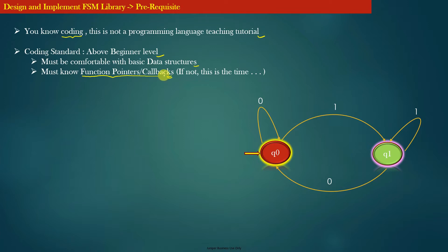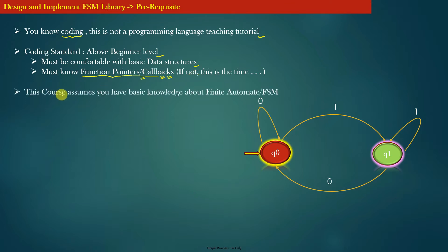All mainstream programming languages have function pointers, and function pointers help you write generic code. This is the best opportunity to do a project that exploits the use of function pointers or callbacks in the best possible way — we will implement something meaningful and useful with the help of callbacks. This course also assumes that you have a basic knowledge of finite state machines or automata. For example, if I give you a problem statement asking you to create a finite state machine that accepts all strings with alternating zeros and ones, you should be able to draw that FSM. This course assumes you understand finite state machines at least at a basic level.